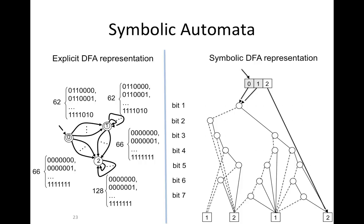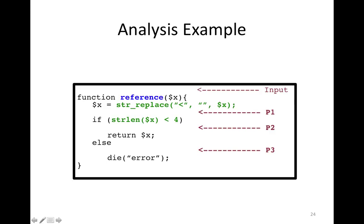Let's take a look at an analysis example. We are given this function, which is a little more complex than the one we started with. When we say we compute the post-image of the function, how do we do this? We use data flow analysis here. Let's restart by giving some input to this function and seeing what the output is.